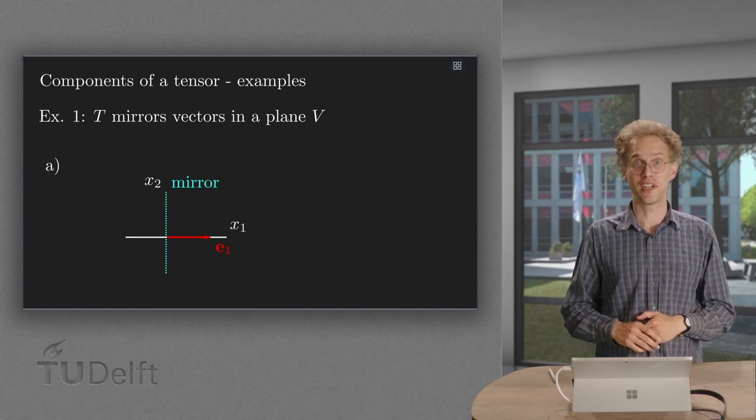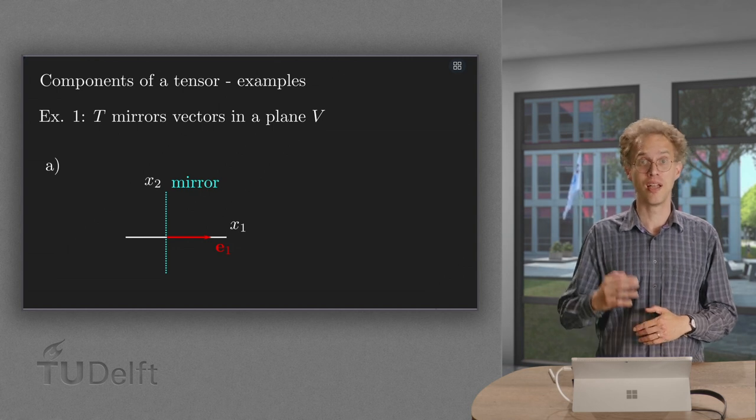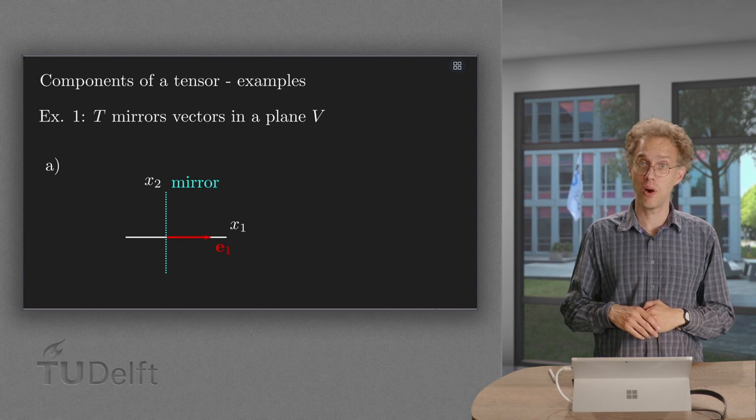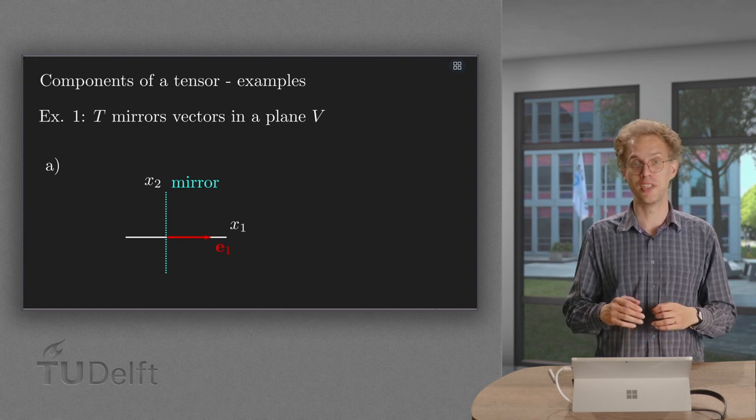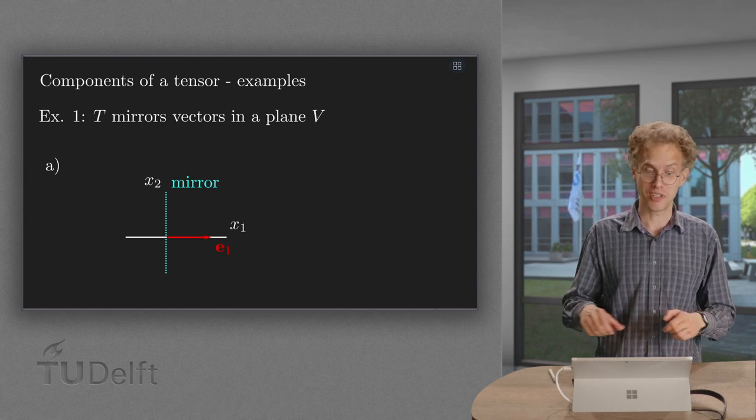The images of the basis vectors suffice to determine the components of a tensor. But how do we determine these images if we have only some geometric description? In this video you will see a few examples how this can be done.